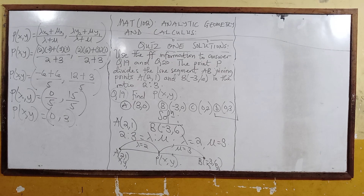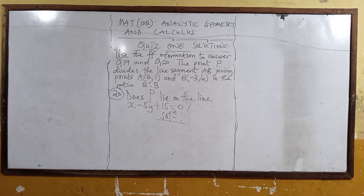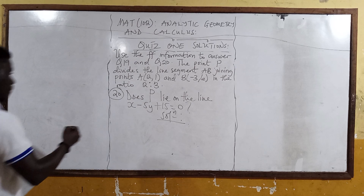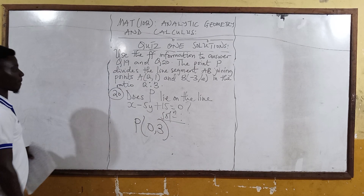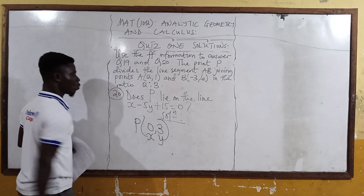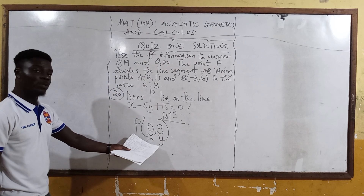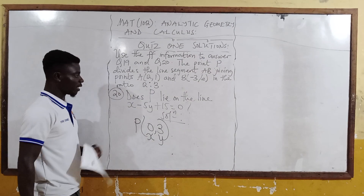We are using the same result to solve question 20. Question 20: does P lie on the line x minus 5y plus 15 equals 0? So now let's see. We have our point P to be (0, 3). Don't forget that the first coordinate is x and the second is y. We just substitute x and y respectively into the equation of the line.